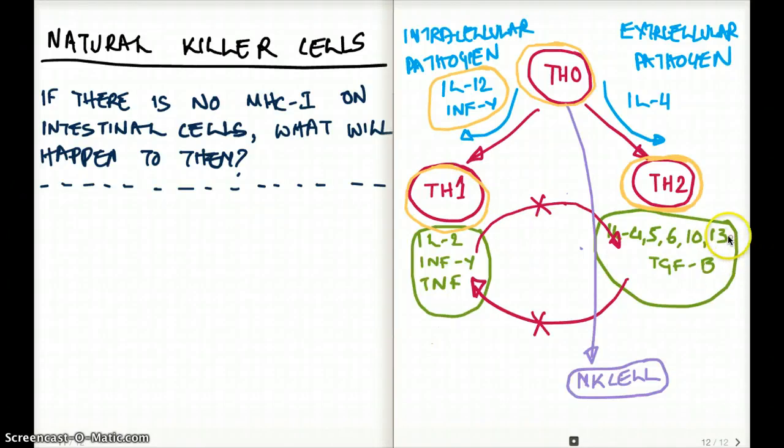So these interleukins by T helper 2 cells can go and stop the T helper 1 cells. It can go and stop T helper 1 and vice versa. The components secreted by T helper 1 cells can go to the T helper 2 cells and stop the release of those cytokines.